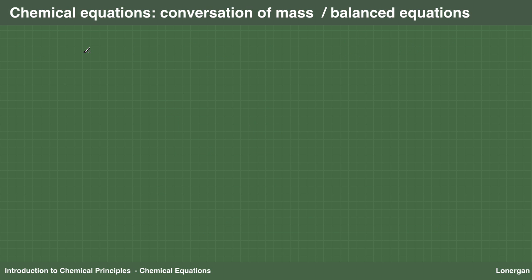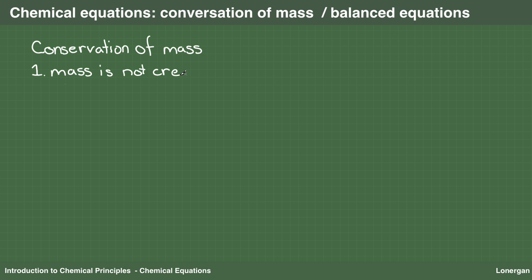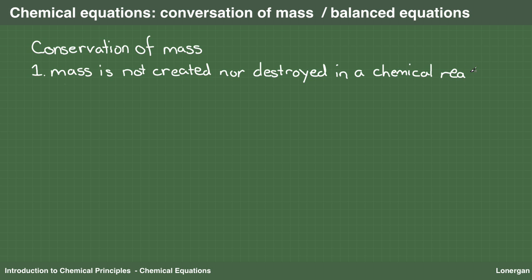Chemical reactions need to be balanced. By that, I mean that they must not violate the law of conservation of mass. Mass cannot be created or destroyed during a chemical reaction. This also means that atoms cannot be created or destroyed as well. They simply recombine in different ways. The two equations we have dealt with so far have both been balanced. To see that, we simply count the number of atoms on each side.